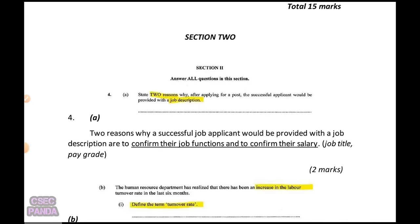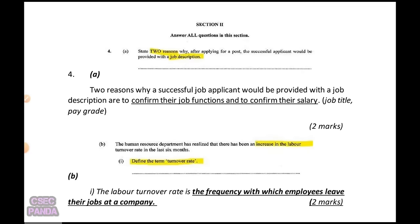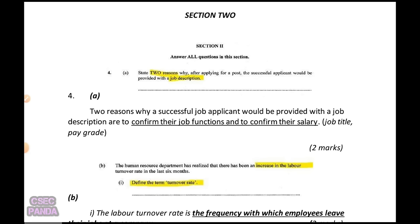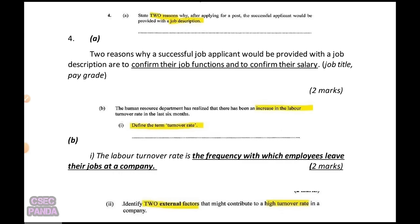That was worth eight marks. We move on to section two with questions four through six. Question four asks: state two reasons why the successful applicant would be provided with a job description. I said: to confirm their job functions, and to confirm their salary. You could also have said their job title, pay grade, or who their manager is — because at its core, this question is about what you'd find on a job description.